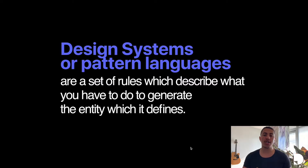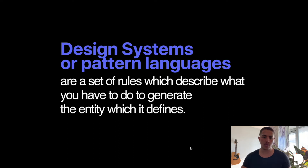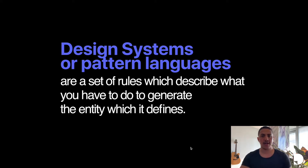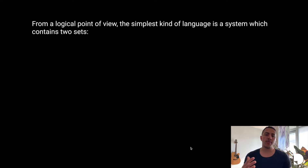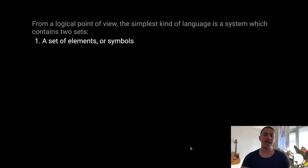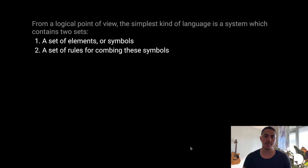Design systems or pattern languages are a set of rules which describe what you have to do in order to generate the entity which it defines. So if you follow these rules defined by the design system you are able to create that entity. From a logical point of view, the simplest kind of a language is a system which contains two sets: a set of elements or symbols, and a set of rules that tell you how to combine these elements or symbols.